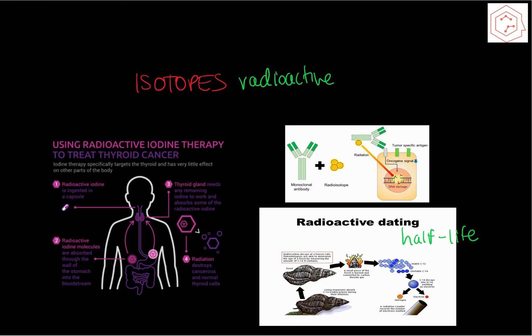Radioactive iodine is ingested and then absorbed by the wall of the stomach and intestines. The thyroid gland will then absorb the remaining radioactive iodine, and the radiation will destroy any cancer cells present in the thyroid gland. A third application involves radioimmunotherapy, in which doctors inject antibodies that have isotopes attached to them. These antibodies flow through the bloodstream and bind to proteins on cancer cells, treating blood cell cancers like leukemia and lymphoma.